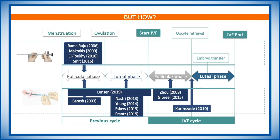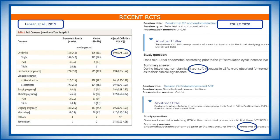However, in the meantime, we have access to better data. Larger RCTs — for example, the paper by Lensen et al., a large RCT published in the New England Journal of Medicine in 2019 — show that the live birth rate after scratching versus the control group is exactly the same, with an adjusted odds ratio of 1.